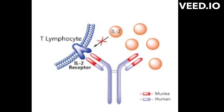By binding to the IL-2R-alpha, Basiliximab decreases the number of activated T-lymphocytes, which reduces the risk of transplant rejection.